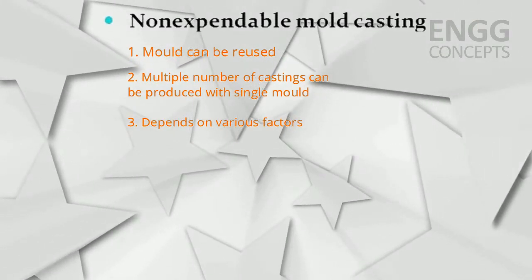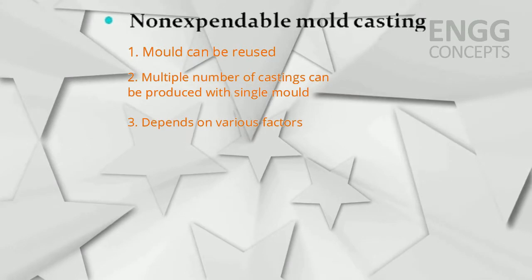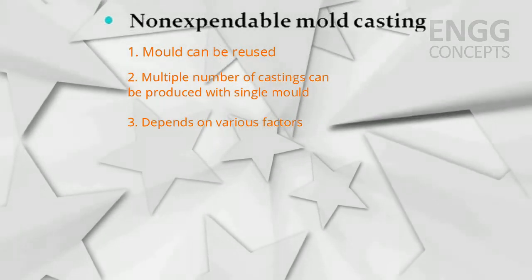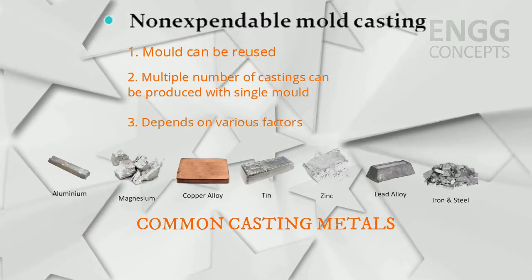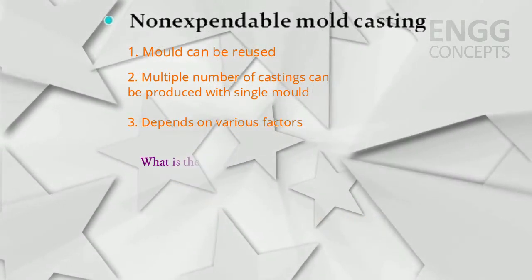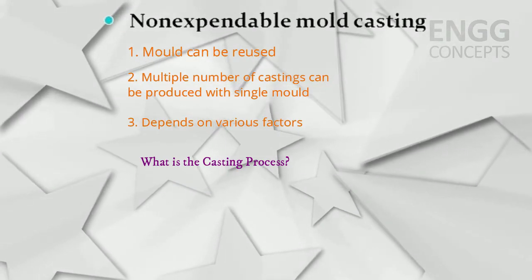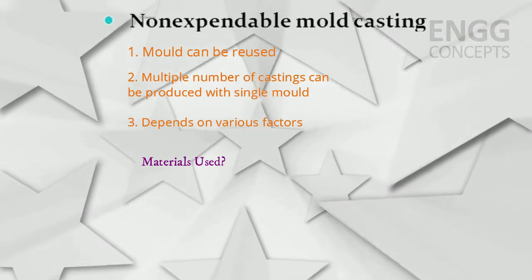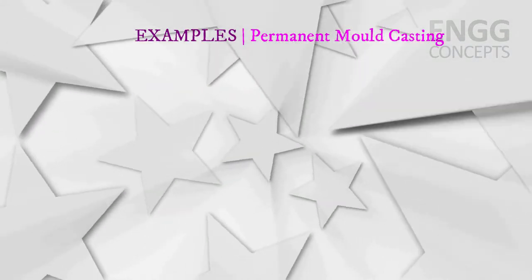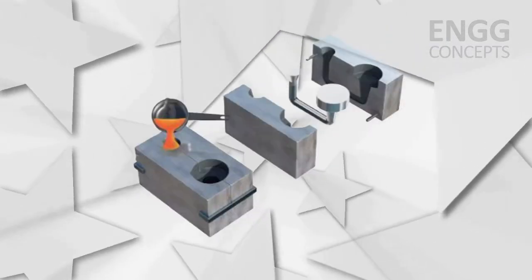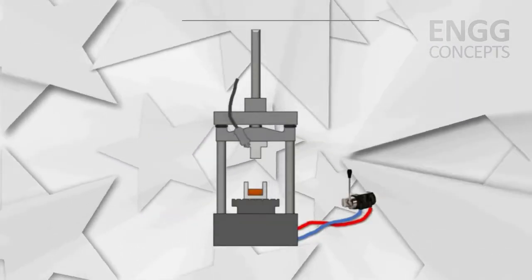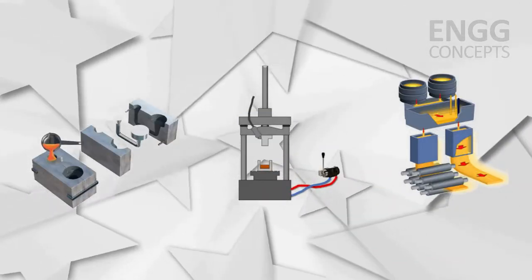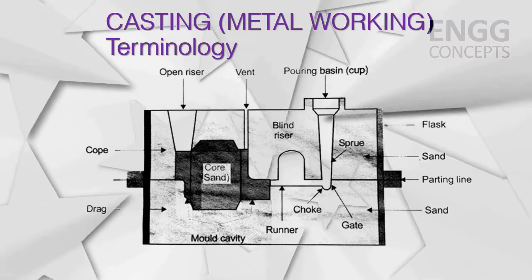The total number of casting parts produced per mold can vary between 100 to 100,000 parts. This depends on various factors: what type of metal is being cast, what casting process is used, and what kind of material is used to make the permanent mold. Examples of permanent mold casting include metal mold casting, die casting, continuous casting, etc. These are also known as die casting processes. Now let's see the common terms related to casting.